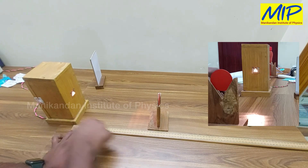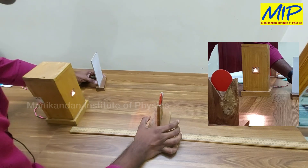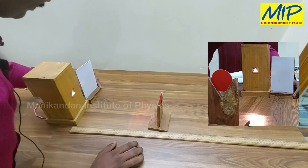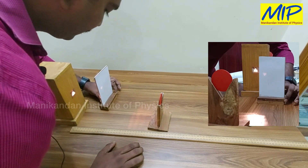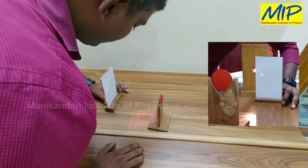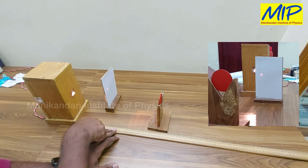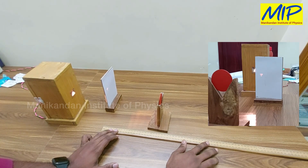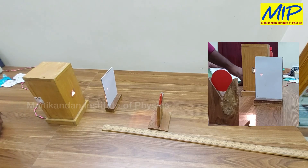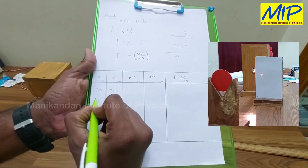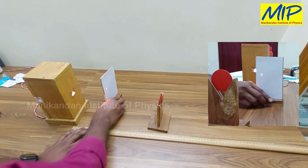Now I'm going to change the object distance from 30 to 32 centimeters. I move the screen towards the mirror until a clear image forms on the screen. Measuring the distance from the mirror to the screen, this is approximately 20 centimeters. So u = 32 cm and v = 20 cm.